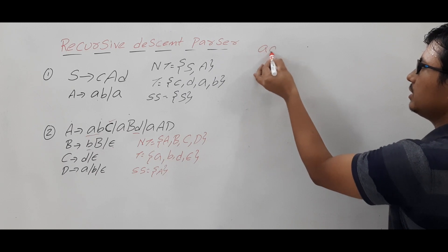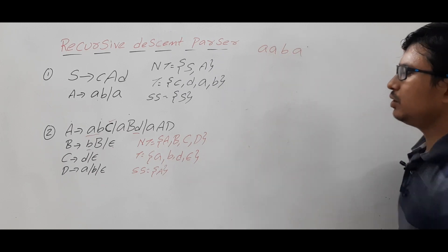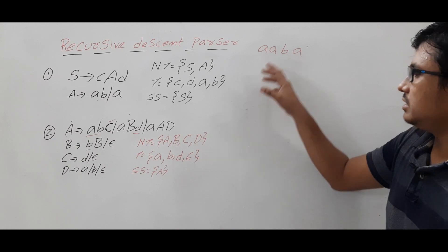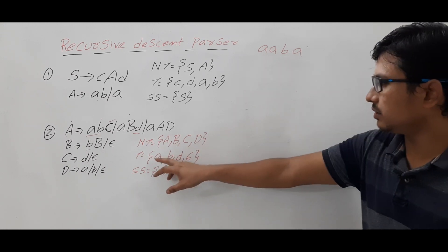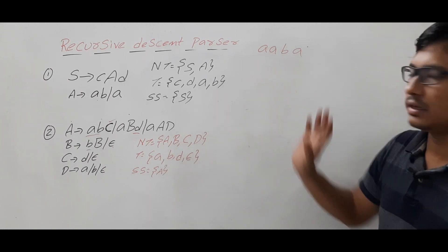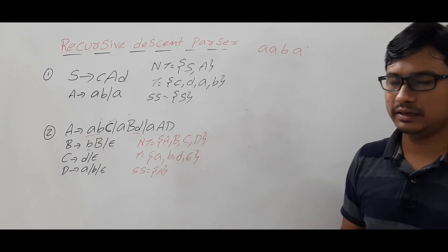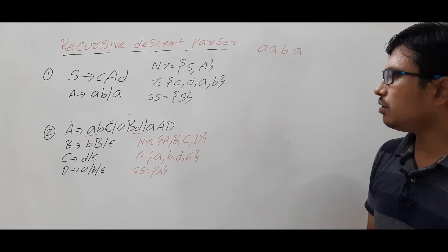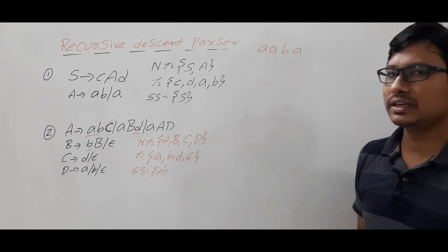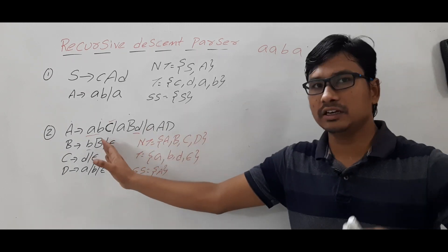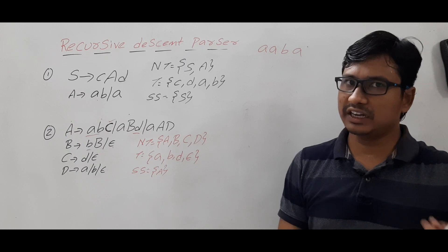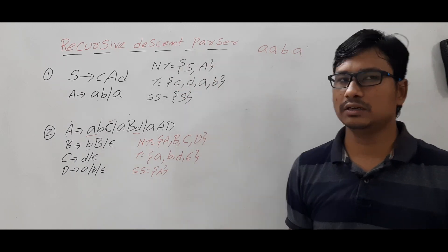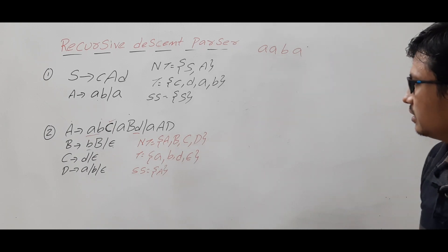Let's check whether 'aaba' consists of all terminals — a is there, b is there. We will check if this string can be generated from this grammar. If it can, what is the parse tree the recursive descent parser will generate? We will look at it now.